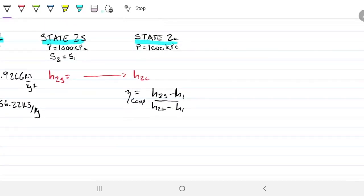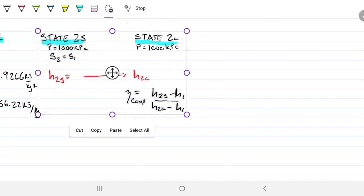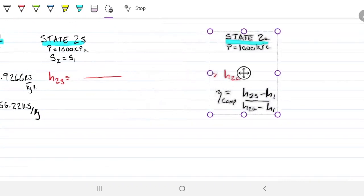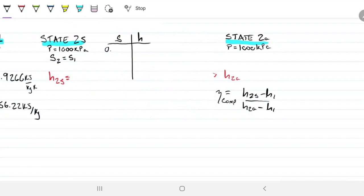OK, so what we know about this state here is that my entropy on one of them is 0.918, the other one is 0.9526. And this is 271.73. This is 282.76. And so I'm going to be interpolating for 0.9266 and grabbing the enthalpy value for 2S. 274.45.